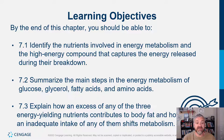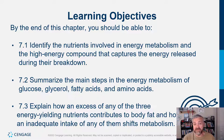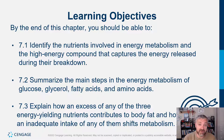Second objective: summarize the main steps in the energy metabolism of glucose, glycerol, fatty acids, and amino acids — we'll cover the big picture. Third: explain how an excess of any of the three energy-yielding nutrients contributes to body fat — your body can turn excess calories into fat regardless of whether they came from carbs, fat, protein, or alcohol. And how inadequate intake shifts metabolism: if you're on a low-carb or ketogenic diet, you're purposely shifting your metabolism so it can't rely on glucose as much, and has to create an alternate fuel source called ketones.